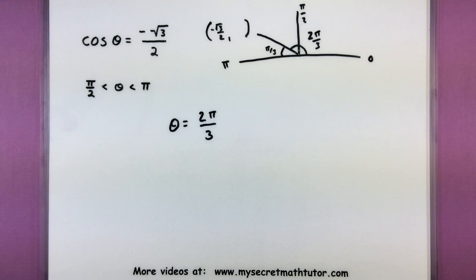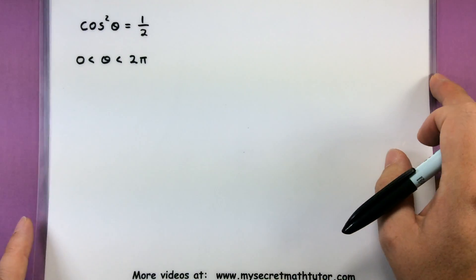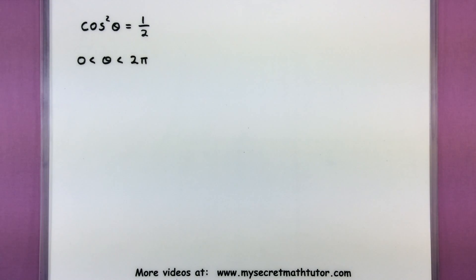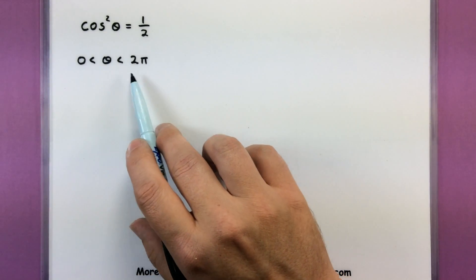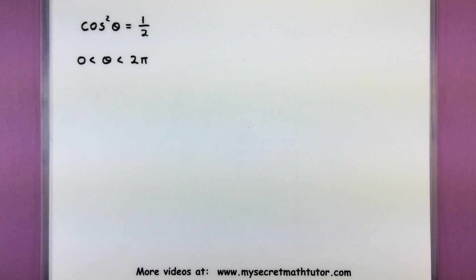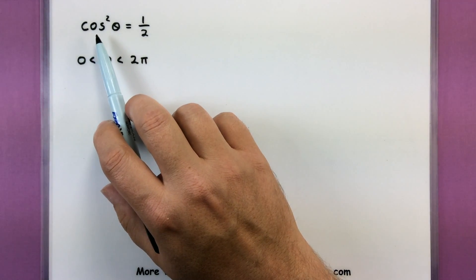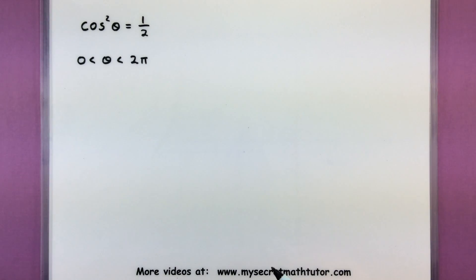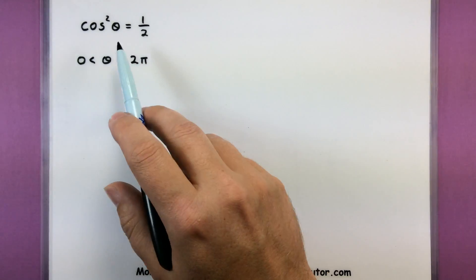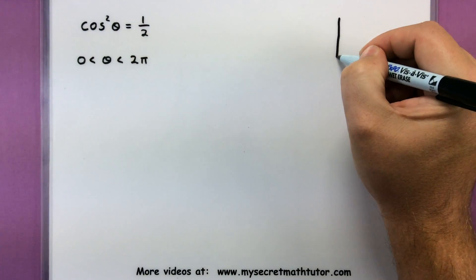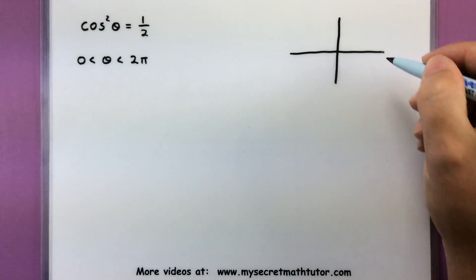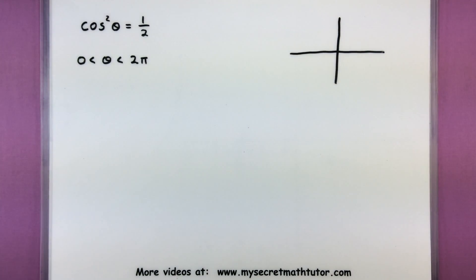Now sometimes you might come across problems where more than one angle will satisfy the given conditions. And if that's the case you really just want to list out all of the angles that work. Let's try this one. This one my angle could be anywhere in the circle anywhere between 0 and 2π. And what I know about it is that if I square cosine I get a value of 1 half. So we're going to have to work with this a little bit. And of course really think about all the values that show up as we go all the way around that circle.